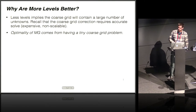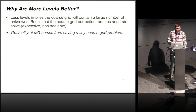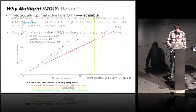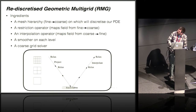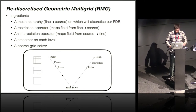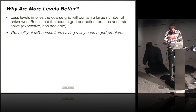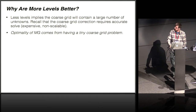Within multigrid hierarchies, why are more levels required? The simple answer is that they are required to actually get this order-n scalability. The coarse grid solver is, in general, not a scalable solver, so it has to be of a constant size to get an overall scalable algorithm.